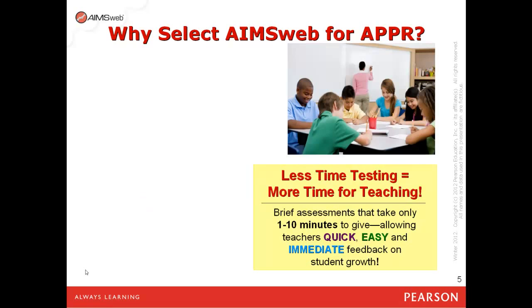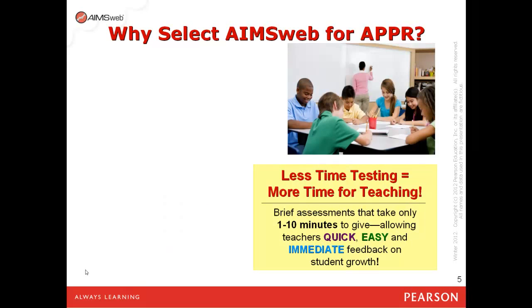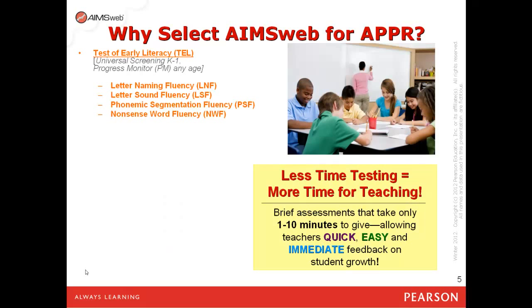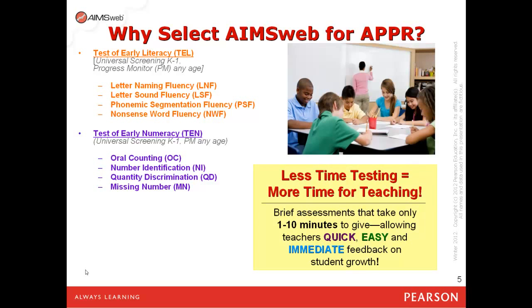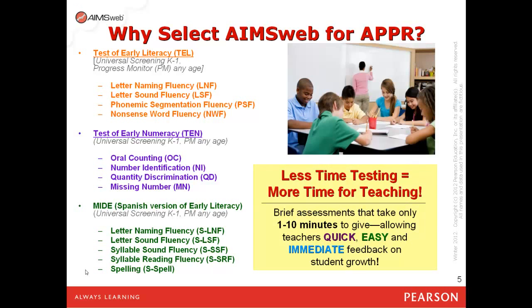Another reason to select AIMSweb for APPR is that teachers will spend less time testing and have more time for teaching. Our assessments are brief, taking only 1 to 10 minutes to give, with many able to be group administered, allowing teachers quick, easy, and immediate feedback on student growth. We offer measures from early literacy to early numeracy for kindergarten and first grade, and also MIVE, our Spanish version of early literacy for grades K and 1.